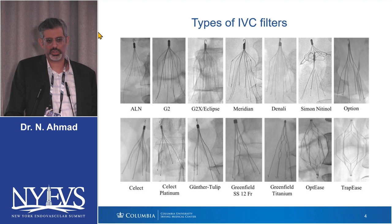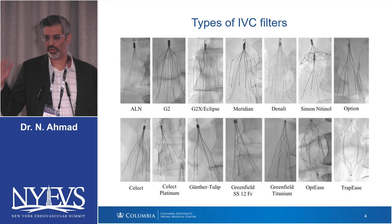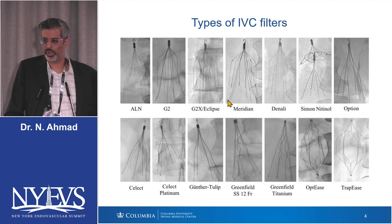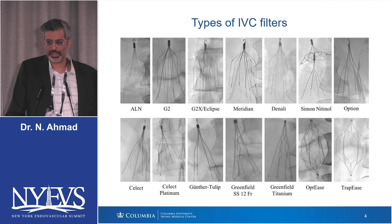For example, the G2 and G2 Eclipse can break apart pretty easily. If you use forceps on those, they can literally just fall apart — that's why there's actually a black box warning for those filters. Those are the patients that come in with their lawyers because they can literally break up into the renal vein or embolize into the pulmonary artery. It's really important to understand what type of filter the patient has when they come in for a retrieval consult.